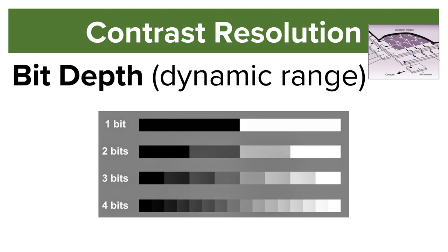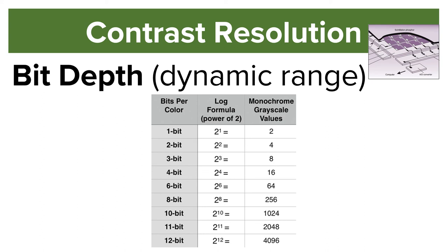The formula to find the amount of gray values is 2 to the power of the bits. For example, when we say a system is 4-bit, that means it has 2 to the power of 4 number of gray values. With classic film radiography, there are about 1,000 different shades of gray, but with digital radiography, there are about 16,000 different shades of gray.